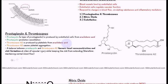Thromboxane A2 is produced by platelets from arachidonic acid and causes platelets to clump together. This typically occurs when there is damage or a tear to the blood vessel wall. A balance between prostacycline and thromboxane A2 is ideal — it favours local vasoconstriction and clot formation at the site of injury, keeps the clot in place, prevents it from spreading, and helps maintain normal blood flow.